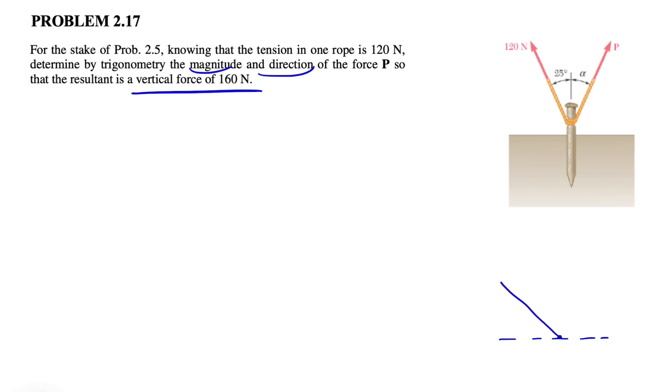the first force is the 120 Newton, which makes 25 degrees with our vertical. We have the force P here, which we have to figure out the magnitude. The resultant of these two would be the vector that connects the beginning to the end of P. That would be our R, which from the question we know is 160 Newton.